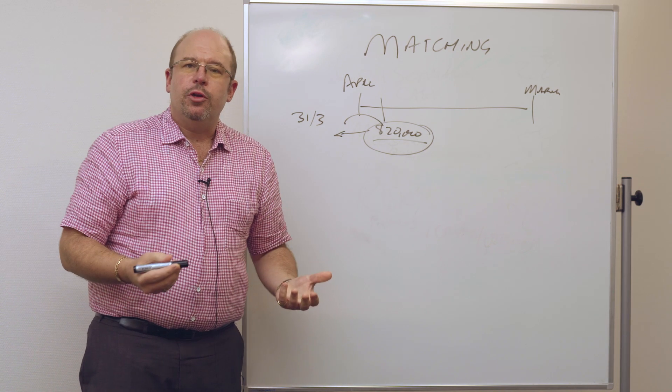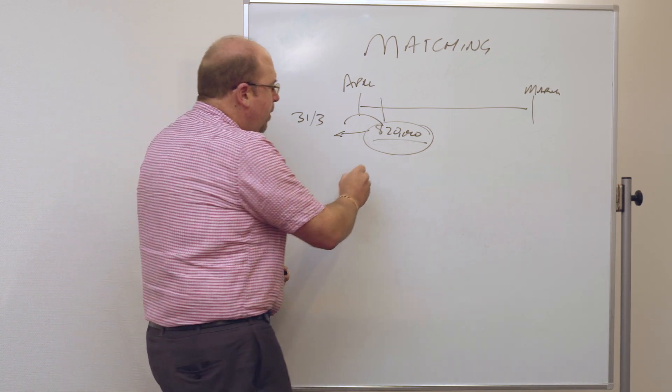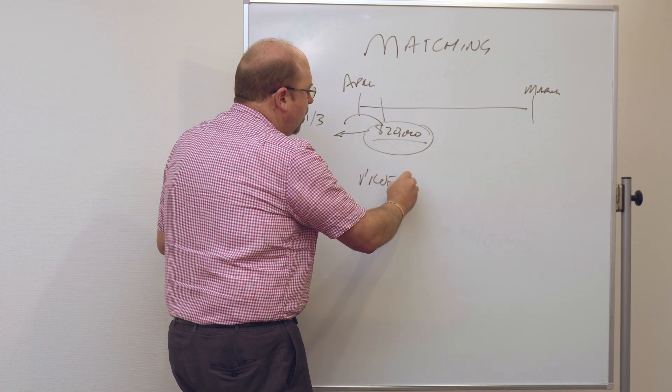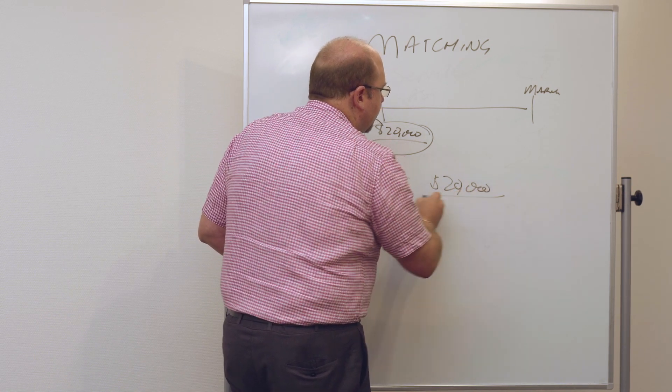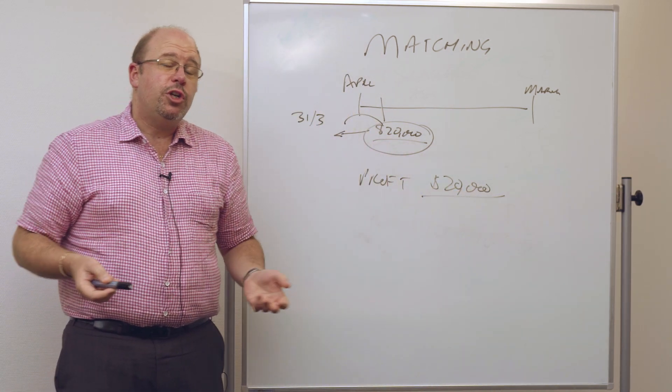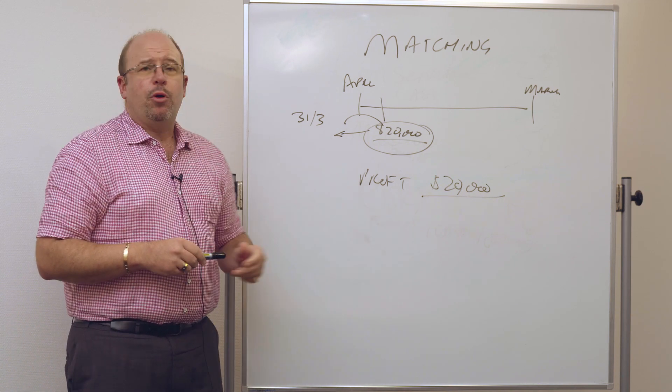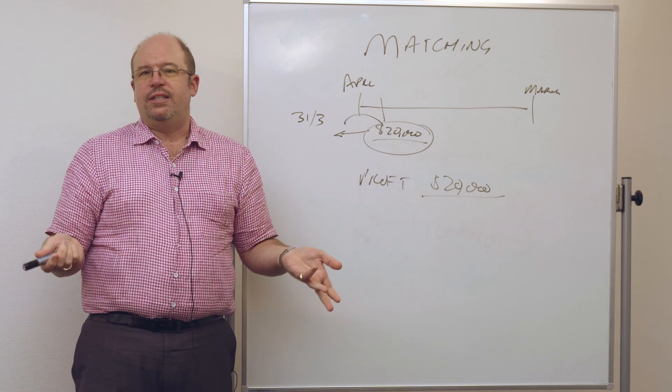So often when you get to look at the P&L, there might be a profit of, say, in this case, $20,000. The first question we usually hear clients say is, I've got a profit of $20,000, where's it gone?